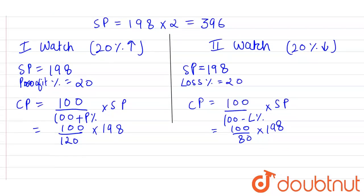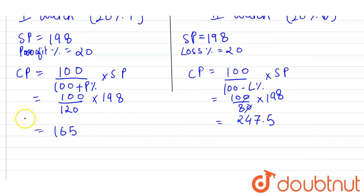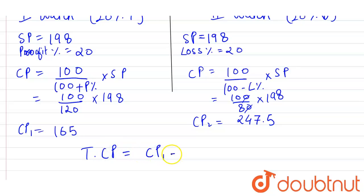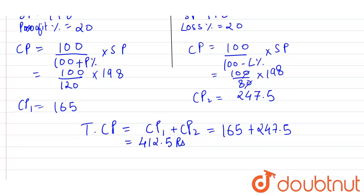Calculating: CP1 = 165 rupees, and CP2 = 247.5 rupees. Adding these together, total CP = CP1 + CP2 = 165 + 247.5 = 412.5 rupees.